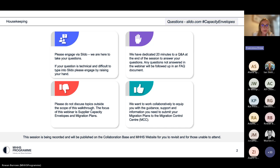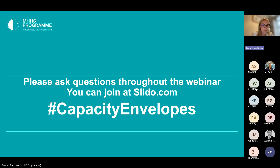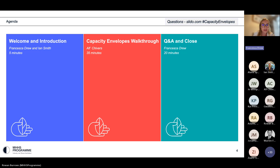In terms of the agenda for today's session, we'll kick off with a brief introduction led by my colleague Ian. Ian will then hand over to Alf, another member of the migration team, who will take us through a worked example to help you understand your capacity envelopes and provide guidance on how to complete the migration plan. We've then set aside protected time to cover all your questions via Slido.